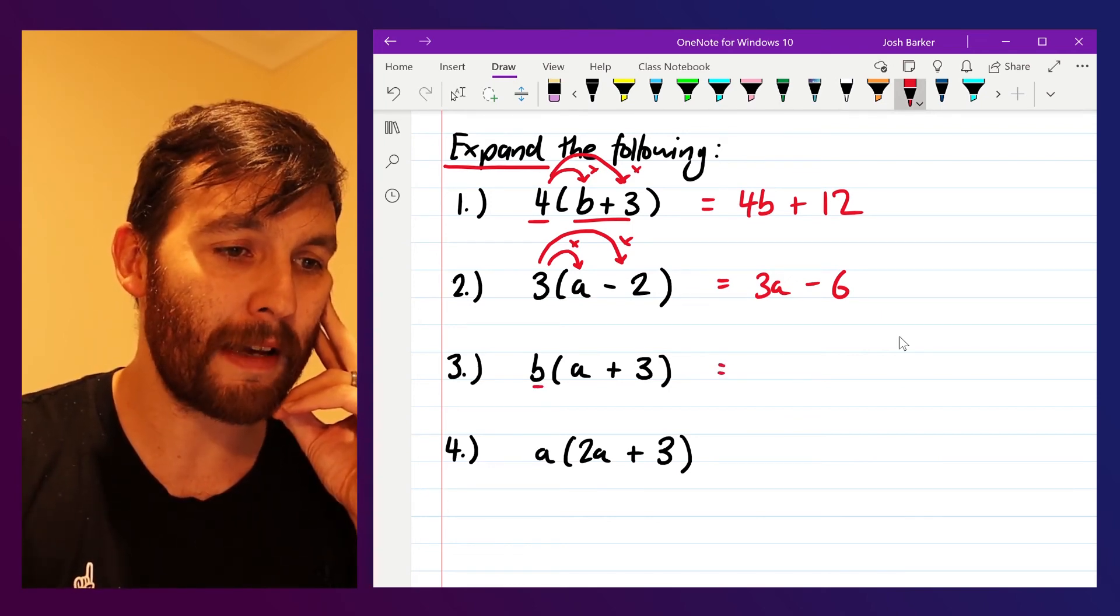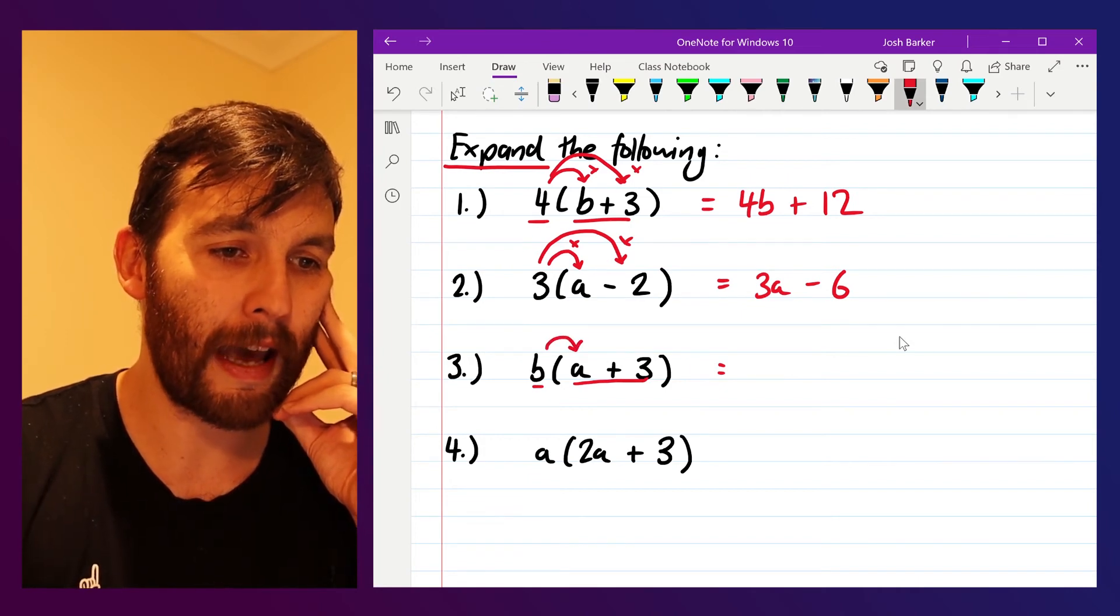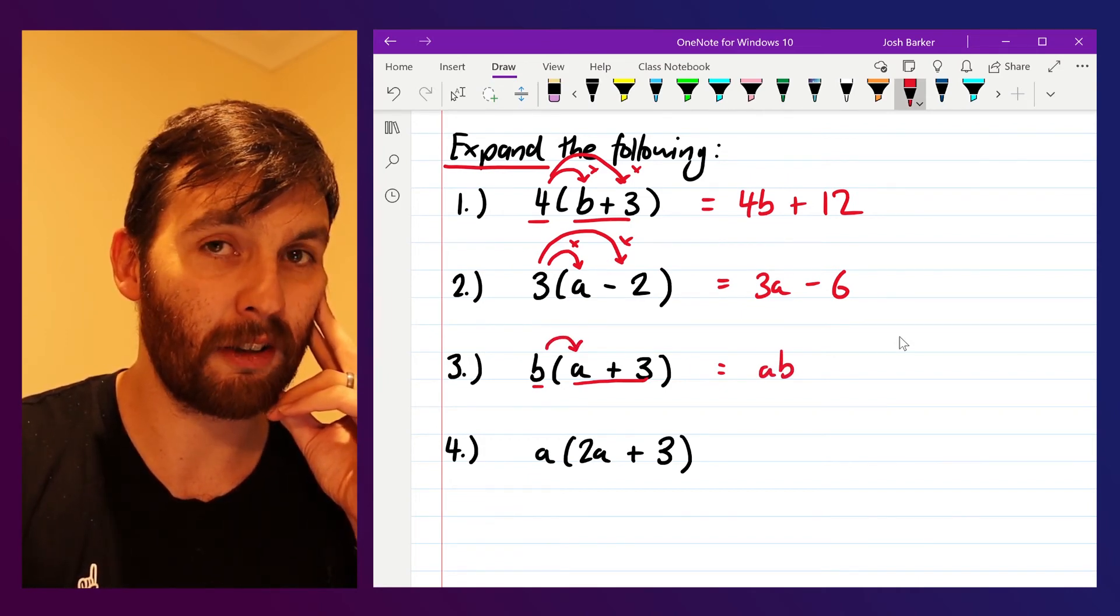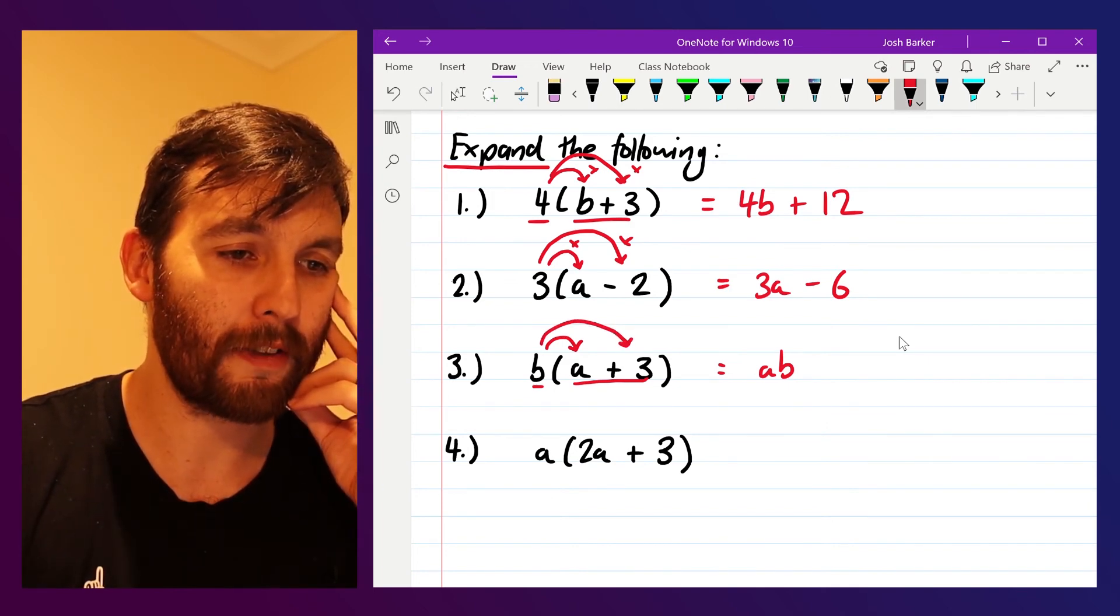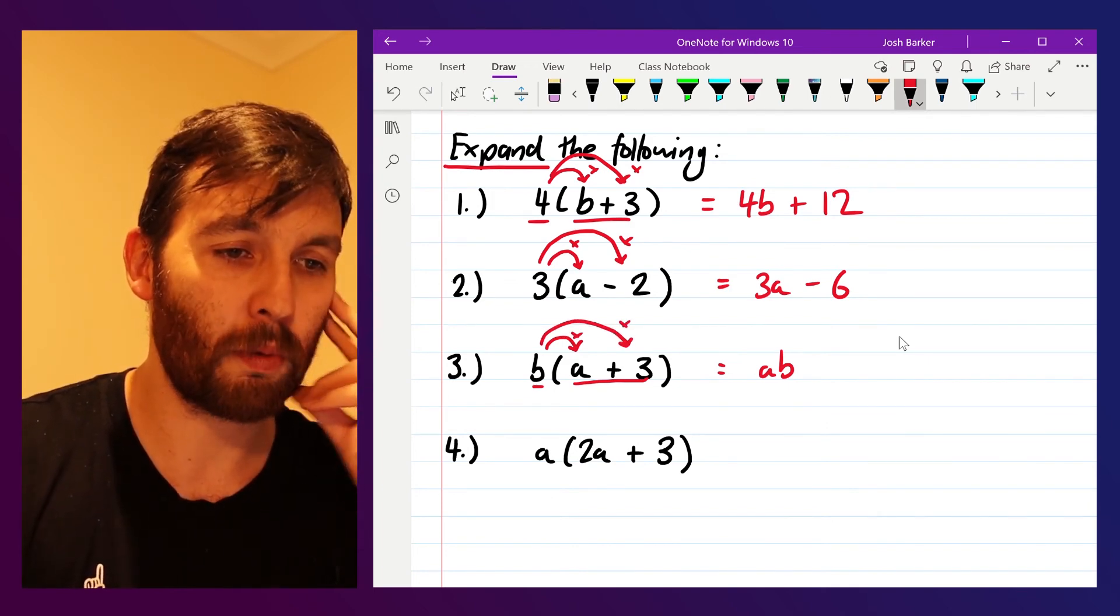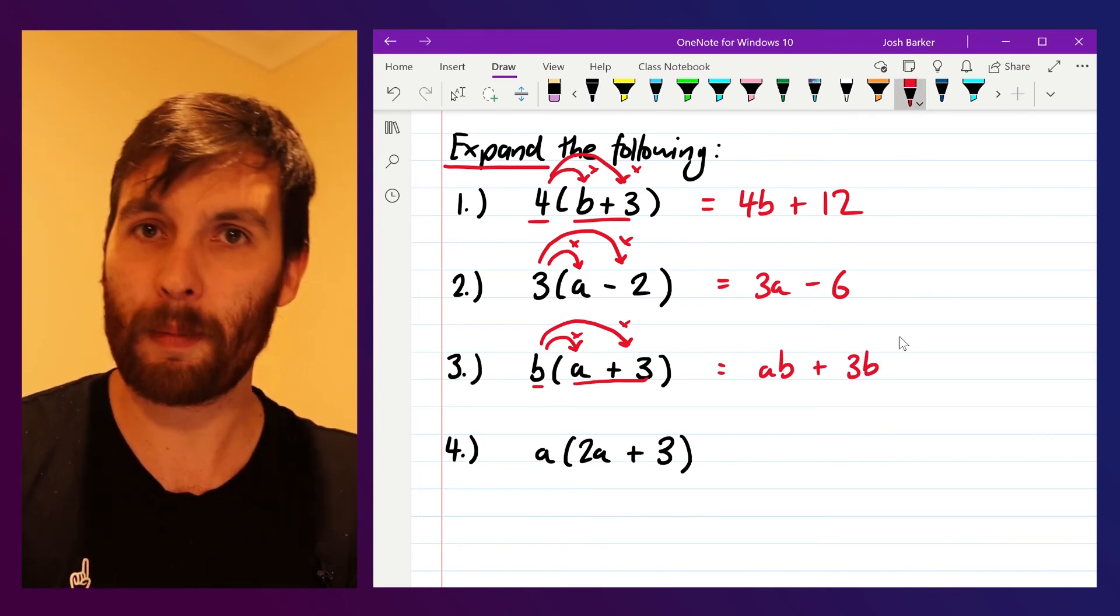Next one underneath, we've got b bracket a plus three. b multiplied by a is just ba or ab, I'll write it alphabetically, and b multiplied by three gives us, well, it's three multiplied by b, three times b, which is just three b like that.